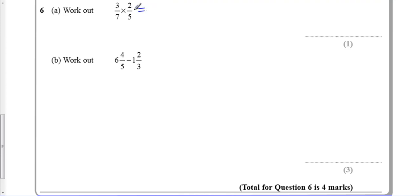Fractions question here. The first one is quite easy. You multiply fractions. You have to multiply the numerators and you have to multiply the denominators. So you get 6 over 35 and that's your answer.